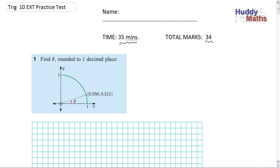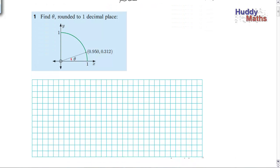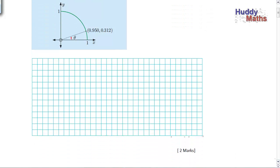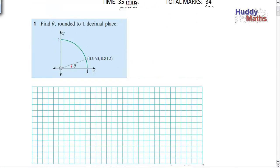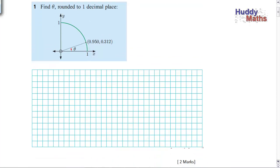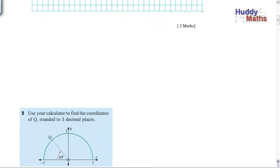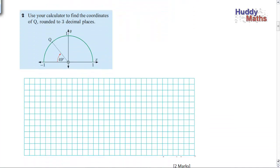You want about 35 to 40 minutes. Question one: find theta, round to one decimal place. Pause the presentation — let's go down and have a look. This is worth two marks, so put this on a piece of paper. You might need to draw the diagram. Have a go. Question two — pause it, see what you think. That's another two-mark question.